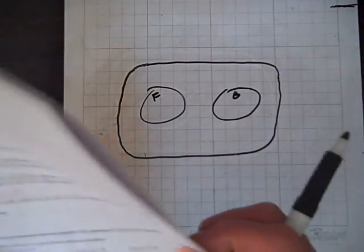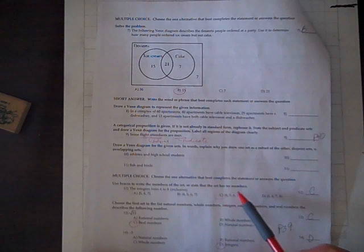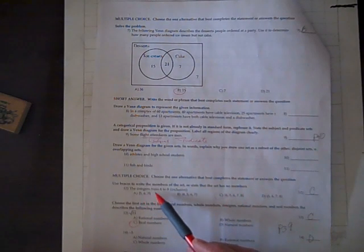Let's go on to number 12: use the braces to write the members of the set, or state that it has no members. The integers from 4 to 8—that includes 4 and 8—that's 4, 5, 6, 7, and 8. And that's C.